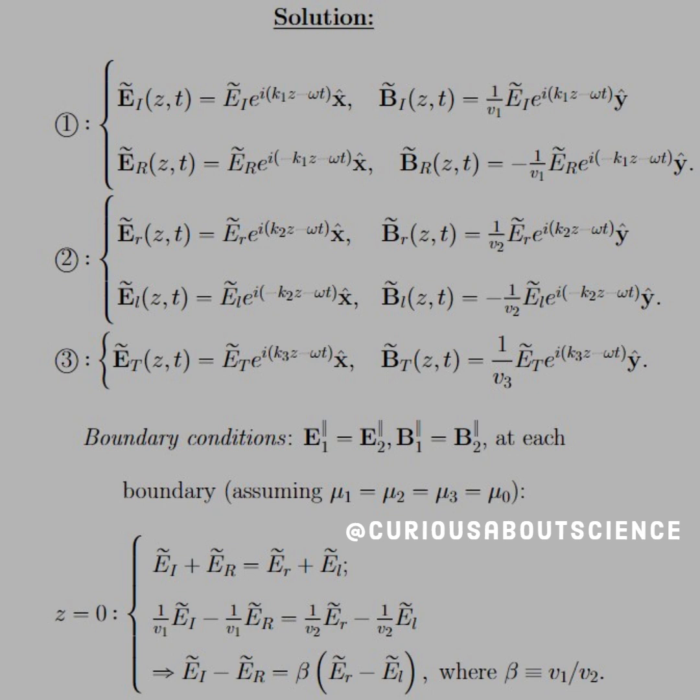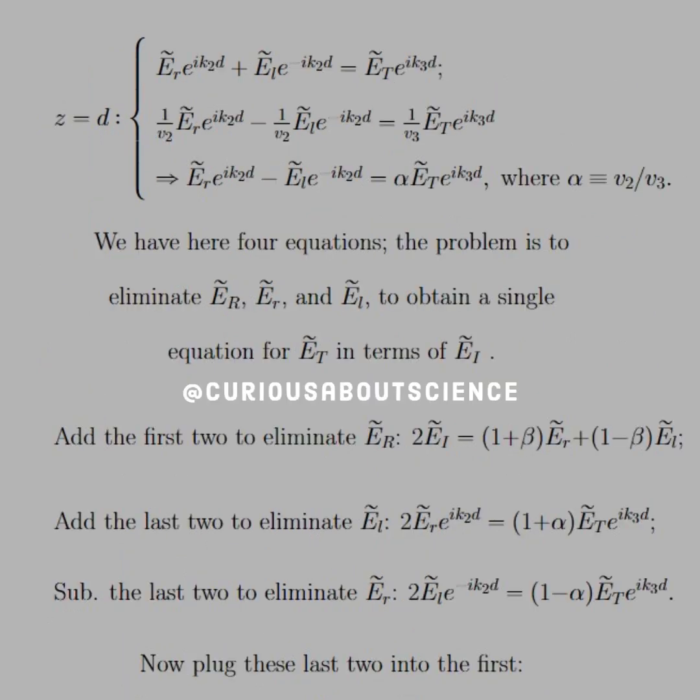The boundary conditions are E1 parallel equal E2 parallel, B1 parallel equal B2 parallel at each boundary, assuming again that the mu's equal each other. So what this tells us is that at z equals 0, we have Ei plus Er equal little er plus little el for E. Then the magnetic field part, and then finally for the last part, we have Ei minus Er is equal to beta, which is v1 over v2. So we or rather we just simplify that for that second equation. And yeah, it's gonna be gross. And then we have another boundary at z equals d. So plug that through. We see what we have there. Plug that through again. Simplify for alpha, which is v2 over v3.